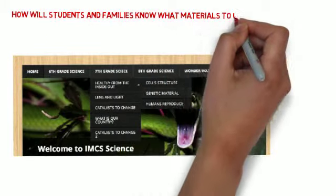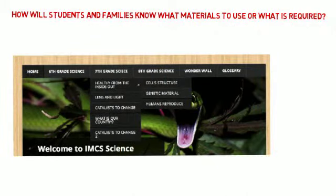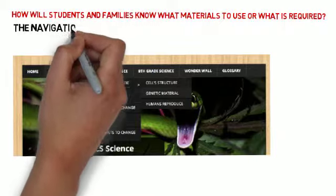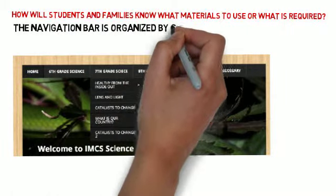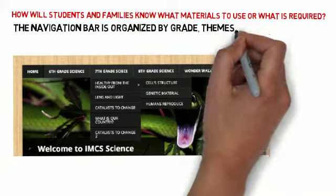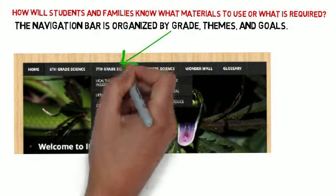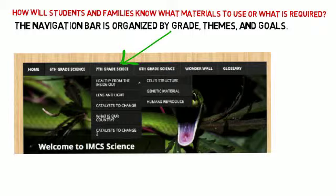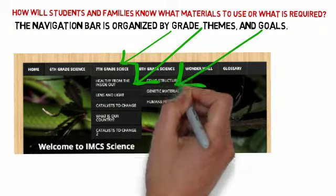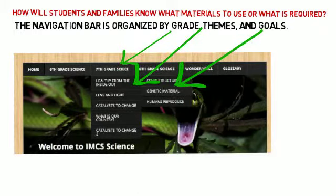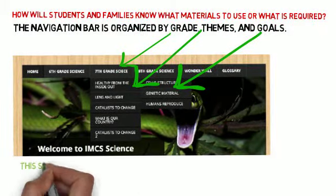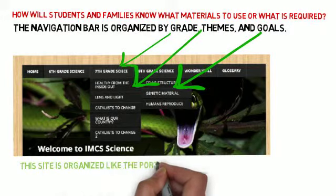So how will students and families know what materials to use or what is required? This website is organized just like the Learning Portal and will support it. The navigation bar is organized by grade, themes, and goals. As you can see here, we have the 7th grade, which then expands into the themes, and on the side are the goals, where you'll find additional materials like this video to support the tasks at hand.